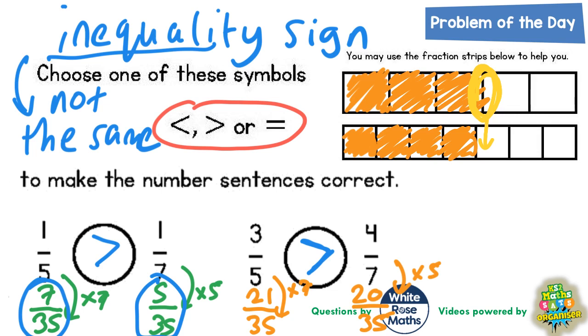What you definitely don't do is just say that 4 is bigger than 3 and 7 is bigger than 5, therefore 4/7 is bigger, because actually it's not. Just because 4 and 7 are both bigger than 3 and 5 doesn't mean that 4/7 is bigger.